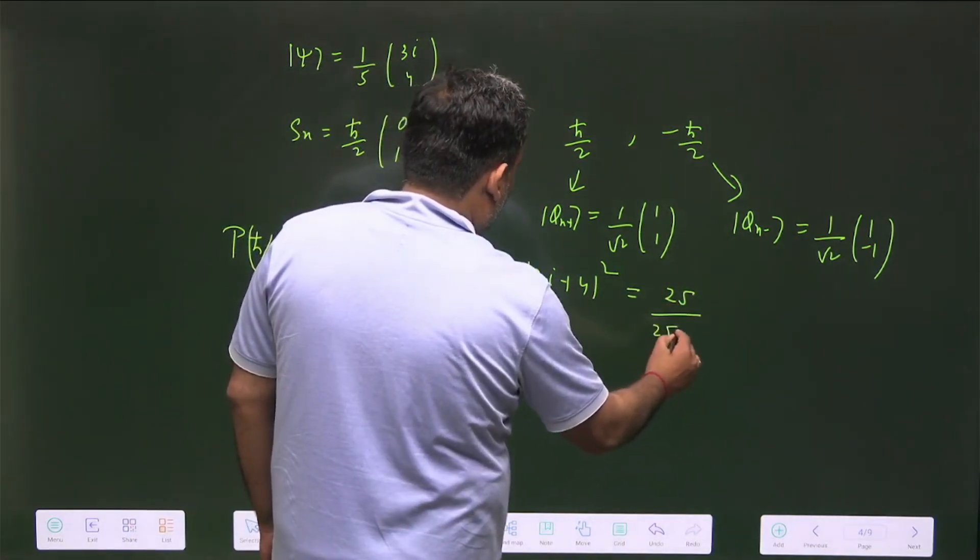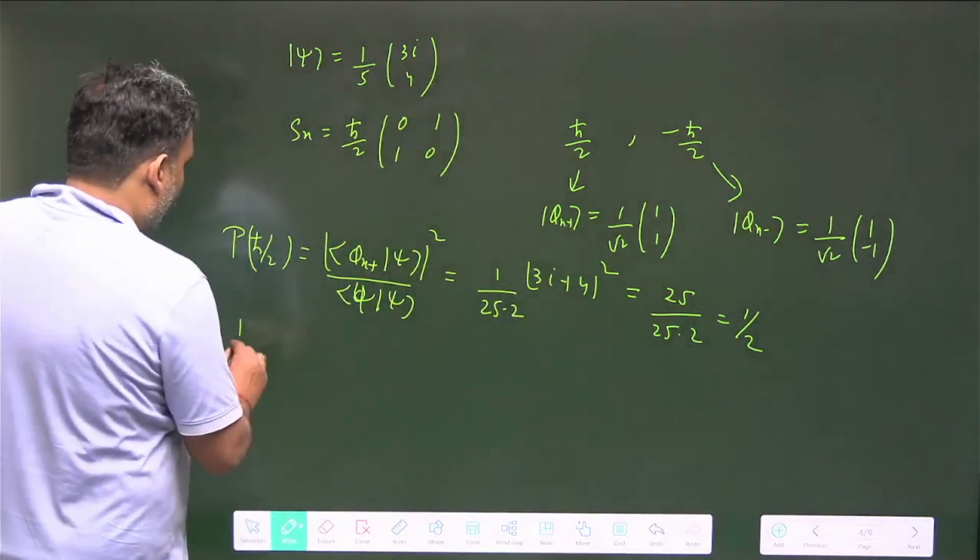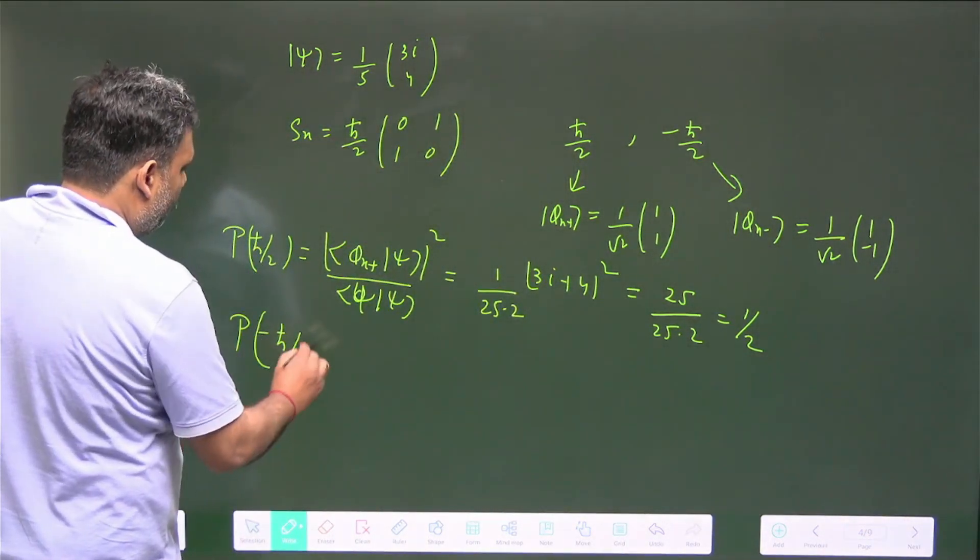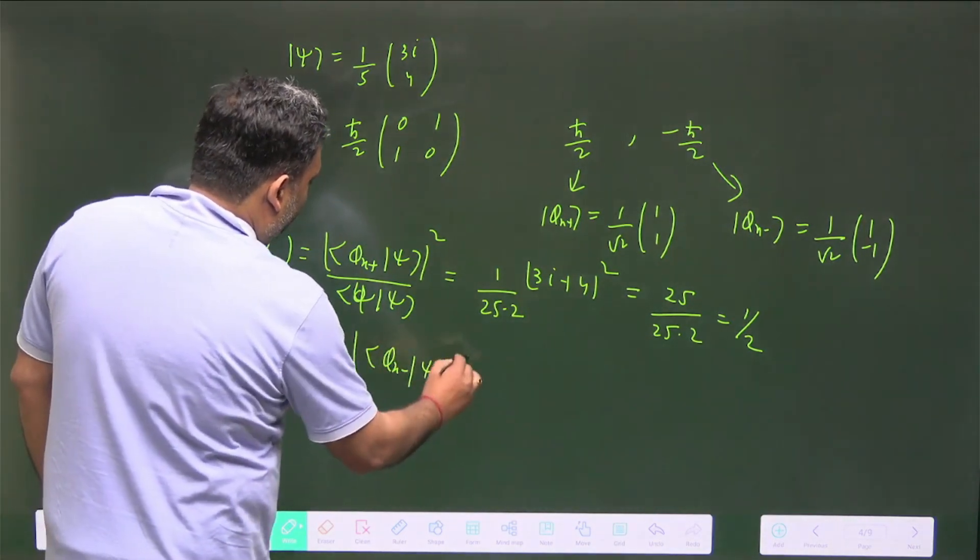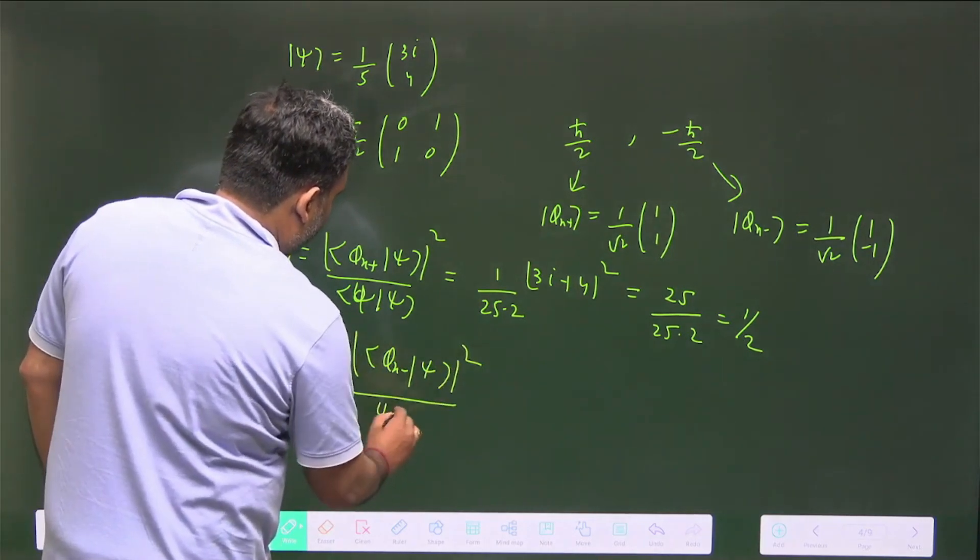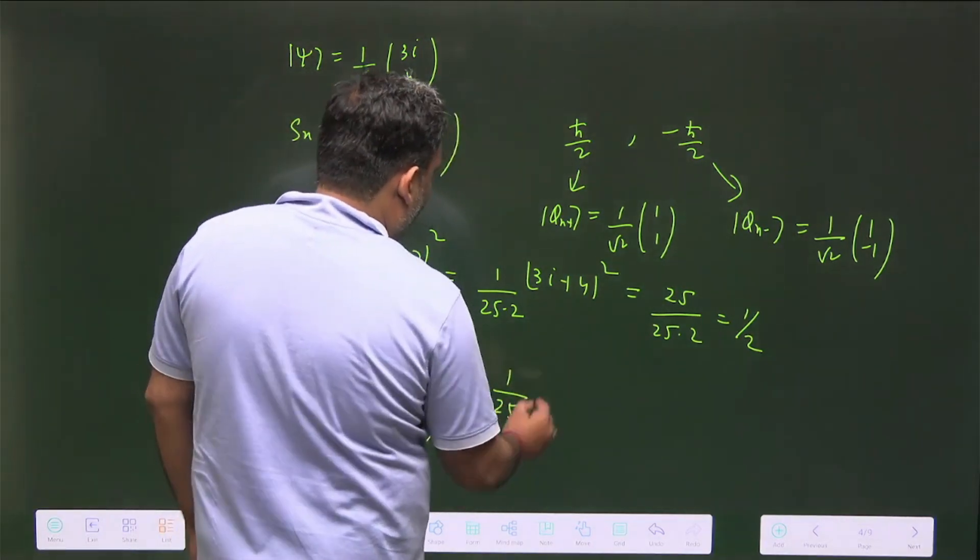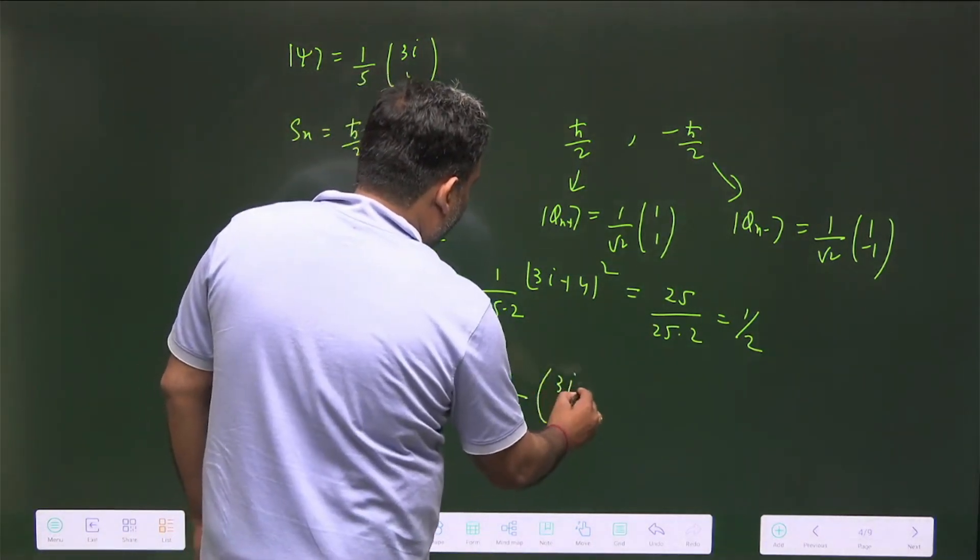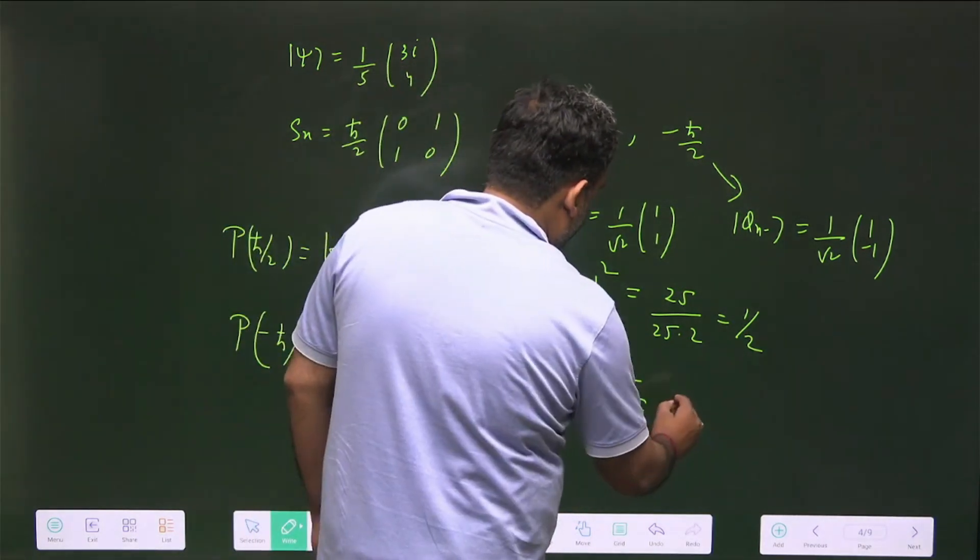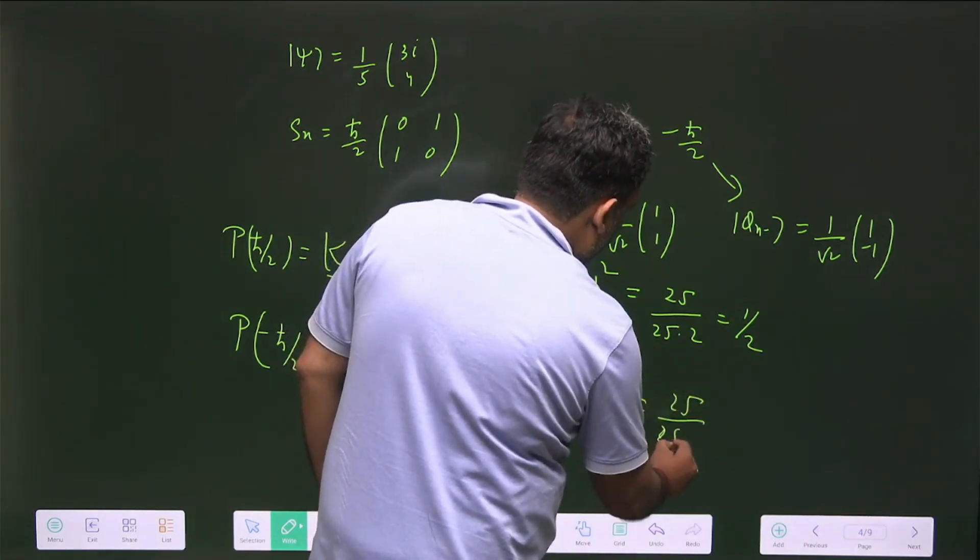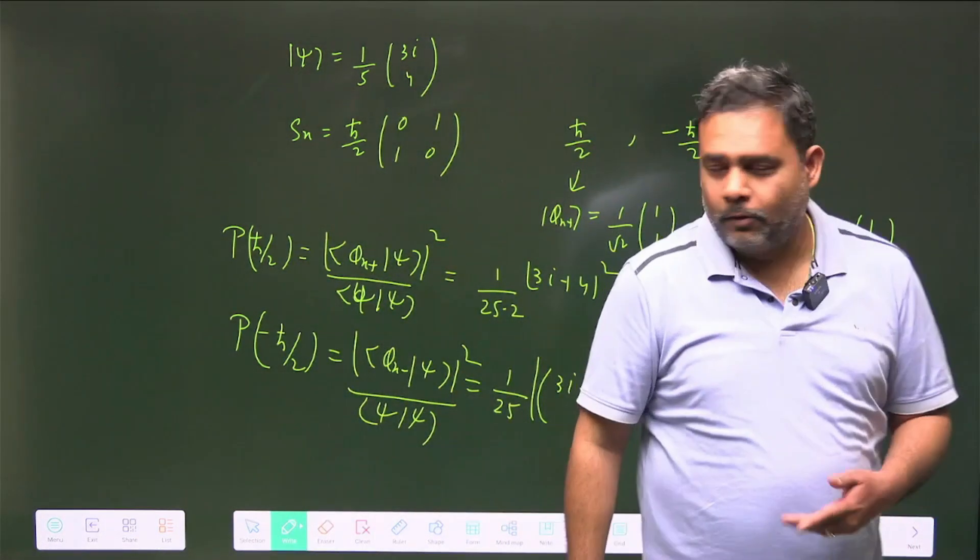Similarly, the probability of getting -ℏ/2 is |⟨φx-|ψ⟩/⟨ψ|ψ⟩|². Again, you'll get 1/25 times |3i-4|², and you have to take the mod square. This mod square is again 25/(25×2), which is 1/2. So the options which give 1/2 and 1/2 are the answer.